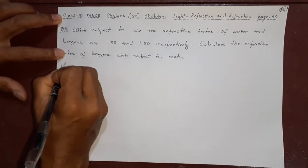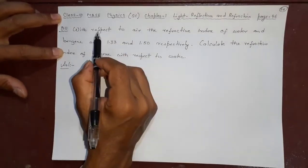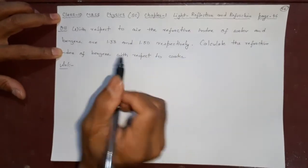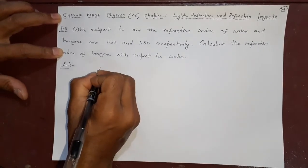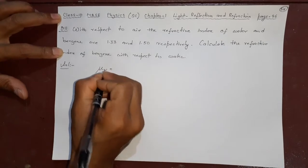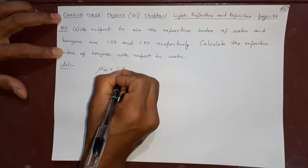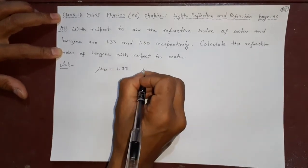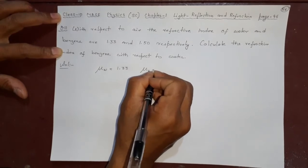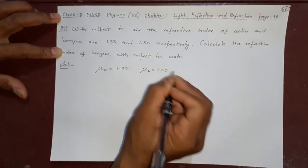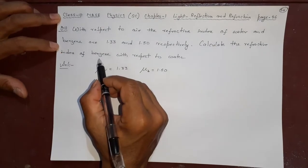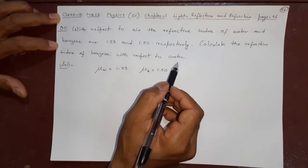The question is: With respect to air, the refractive index of water (μw where w stands for water) is 1.33, and benzene (μb) is 1.50. Calculate the refractive index of benzene with respect to water.